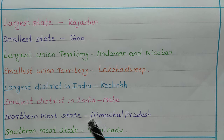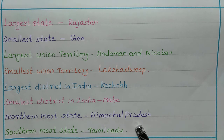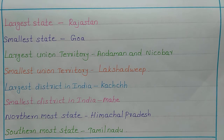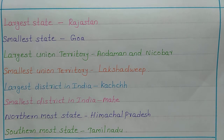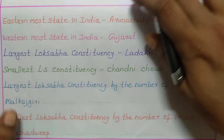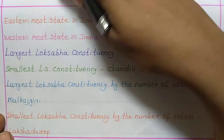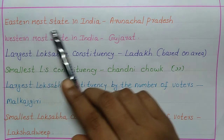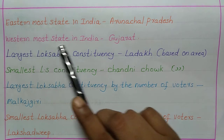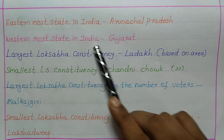The northernmost state is now Himachal Pradesh — before it was Jammu and Kashmir, but since Jammu and Kashmir is not a state now, the northernmost state is Himachal Pradesh. The southernmost state is Tamil Nadu. The easternmost state in India is Arunachal Pradesh, and the westernmost state is Gujarat.